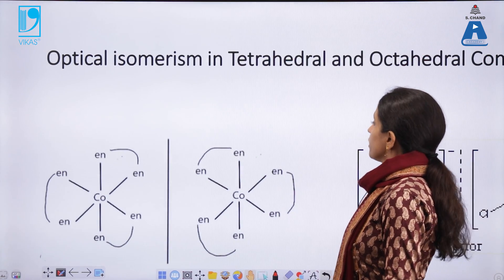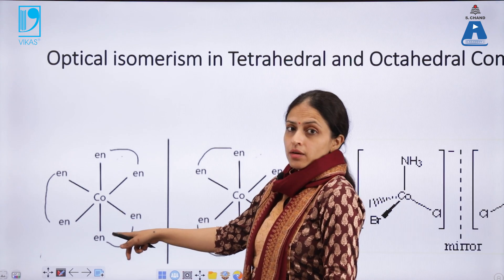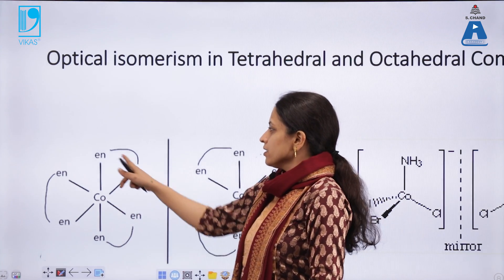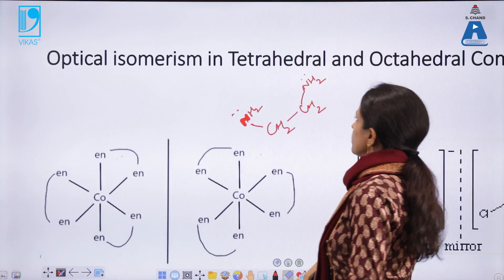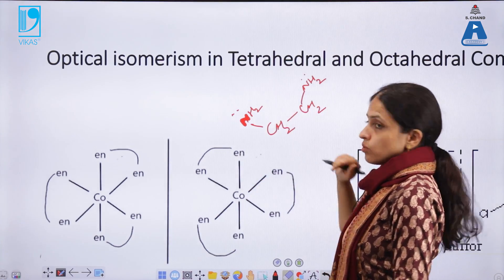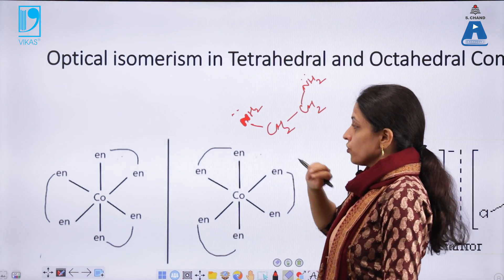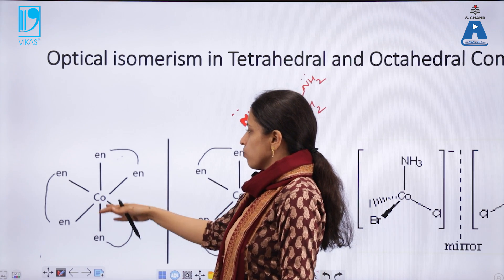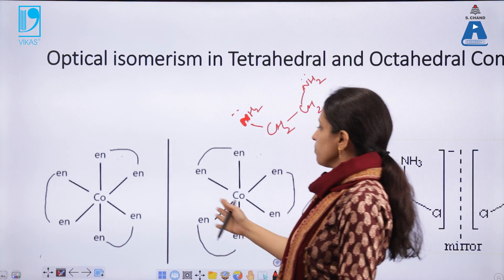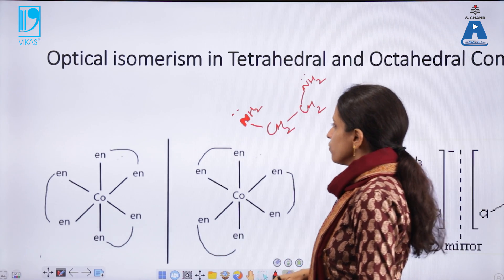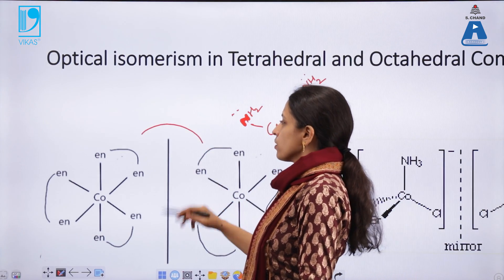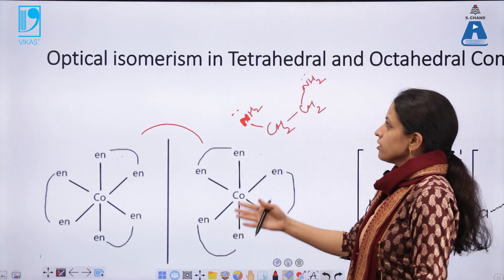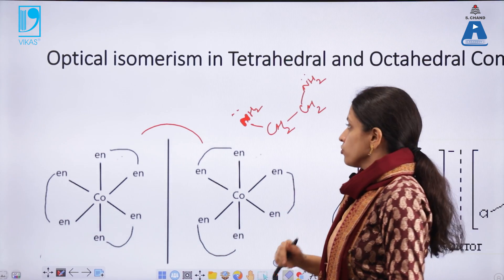Looking at optical isomerism in an octahedral complex, as shown by a tris complex of ethylenediamine with cobalt: ethylenediamine is a bidentate ligand with two nitrogen donor atoms bearing lone pairs of electrons. When the ethylenediamines are attached to the cobalt, the complex can exist as a pair of non-superimposable mirror image stereoisomers, demonstrating optical isomerism in an octahedral molecule.